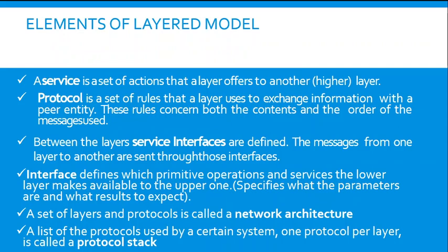The elements of the layered model: a service is a set of actions that the layer offers to another or higher layer. A protocol is a set of rules that the layer uses to retrieve, send, and exchange information with a peer entity. These rules concern both the contents and the order of the messages. Between the layer services, interfaces are defined where messages come from one layer to another through different interfaces, defining which primitive operations the lower layer makes available to the higher one.